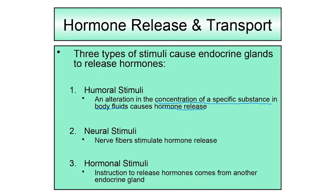We also looked at humoral stimuli when we were in the skeletal system studying blood calcium regulation. We learned about calcitonin and parathyroid hormone — parathyroid hormone is released by the parathyroid gland when blood calcium levels become too low. In that case, the specific substance is calcium, its concentration has decreased in the blood, and that caused parathyroid hormone to be released. Those are two examples of hormones released by humoral stimuli.